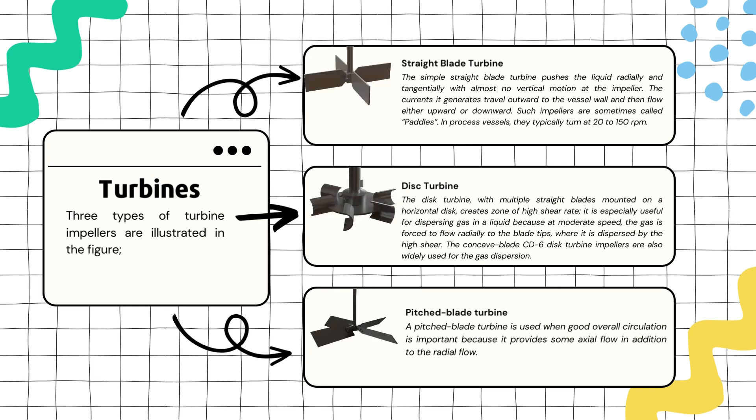The next type of turbine is a disc turbine. The disc turbine features multiple straight blades mounted on a horizontal disc. It's known for creating an area with a higher shear rate. It's particularly useful for mixing gases into a liquid because at moderate speed, the gas is forced to move radially towards the tip of the blades.